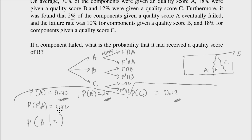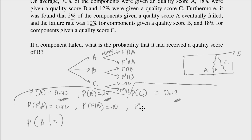We are given F given A. We also have failure given B — the probability of failure given B is 10%, or 0.10. And we also have failure given C — the probability of failure given C is 18%, or 0.18.